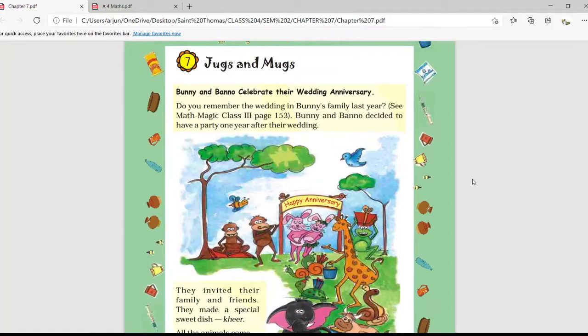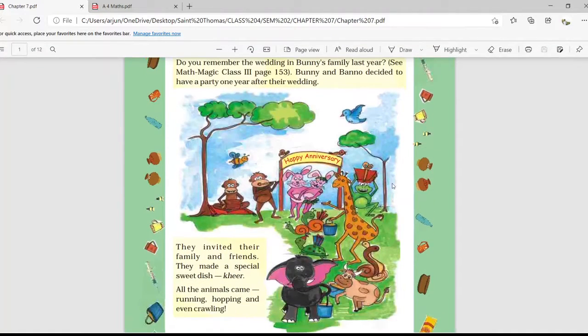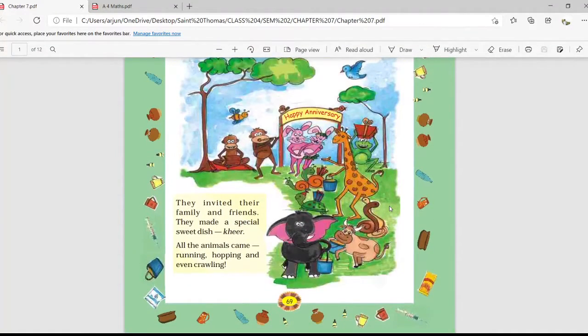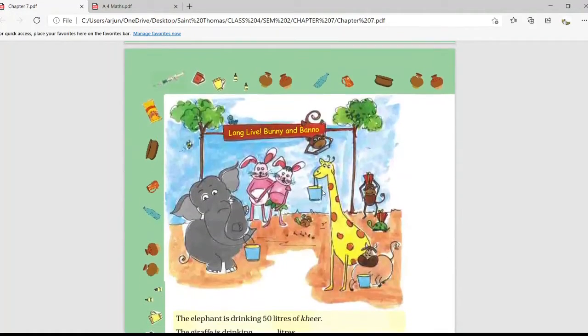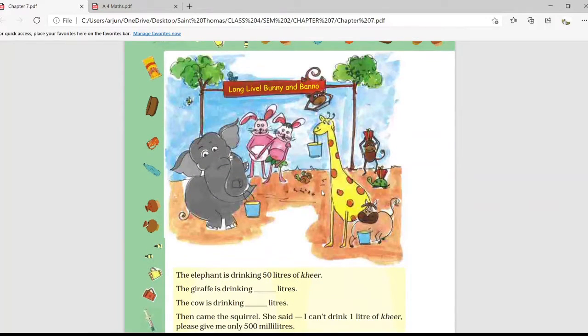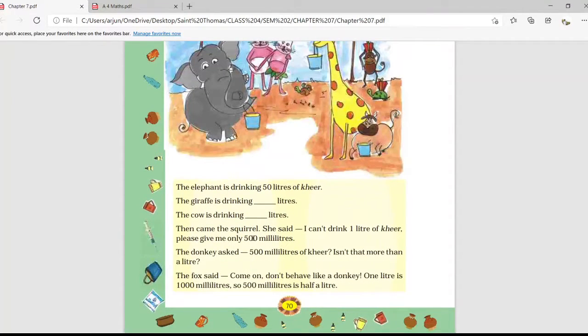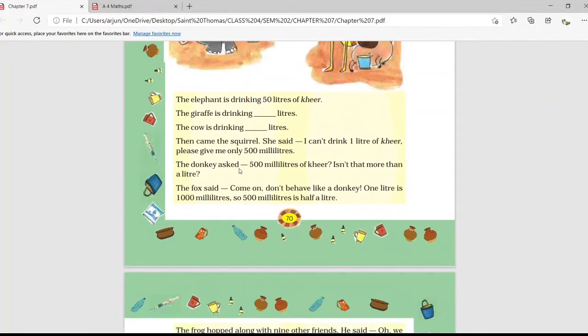The chapter started with one story of a wedding anniversary. You will be remembering this story. All animals were gathered for eating a sweet dish which was kheer. Kheer was going to be distributed among all the animals of the forest: giraffe, elephants, rabbits, rat, cow, everyone was there. So elephant needed 50 liters of kheer. Then we have seen how much kheer will be needed by giraffe, then how much kheer will be needed by cow.